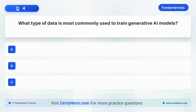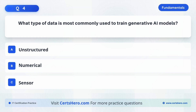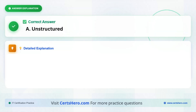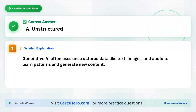What type of data is most commonly used to train generative AI models? A. Unstructured. B. Numerical. Or C. Sensor. The right answer is A. Generative AI models are typically trained on unstructured data like text, images, audio, and video. This variety helps them learn patterns and generate realistic content.